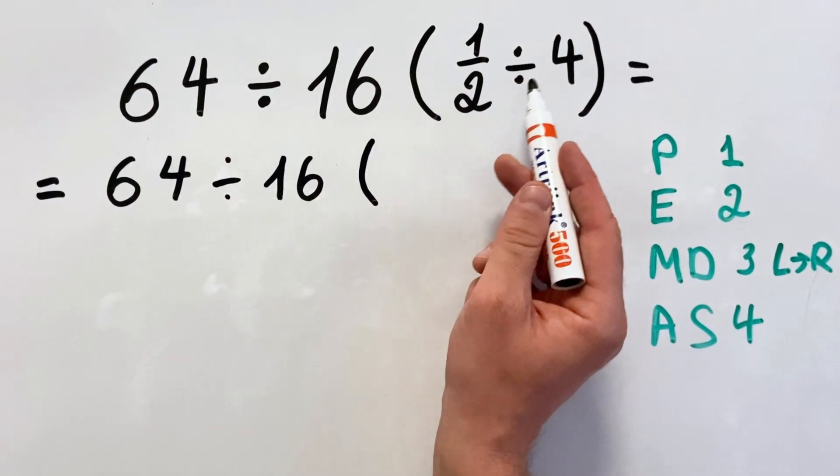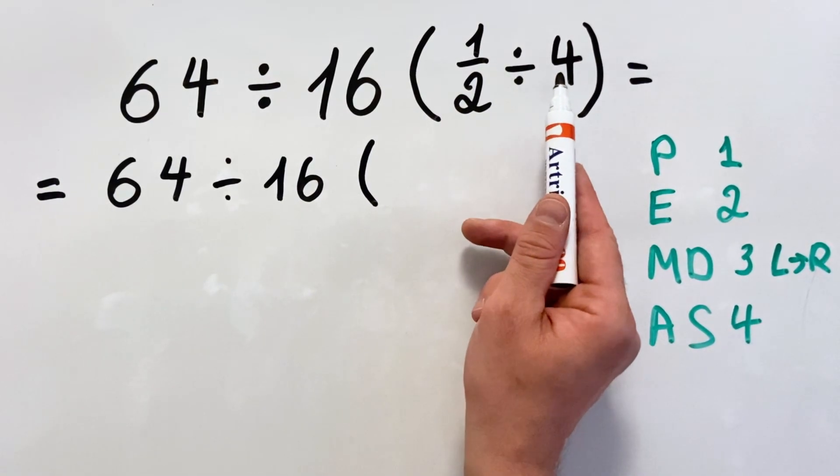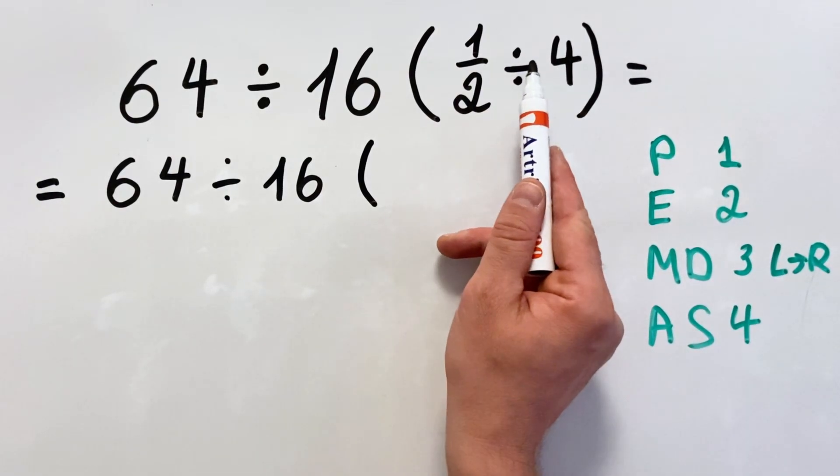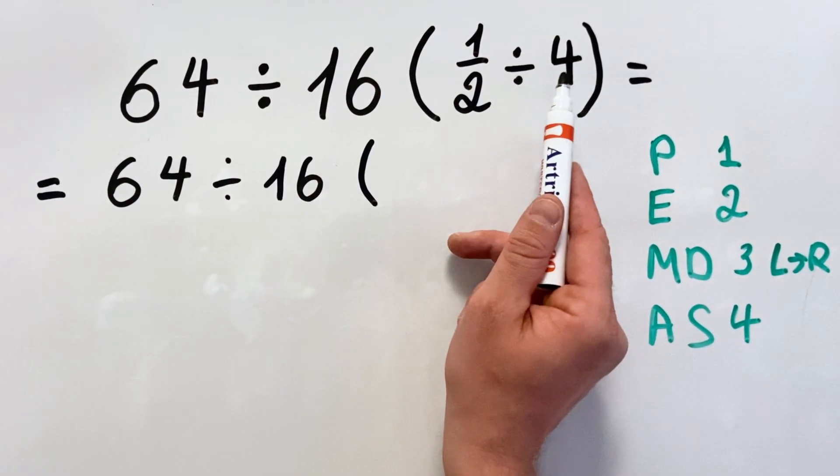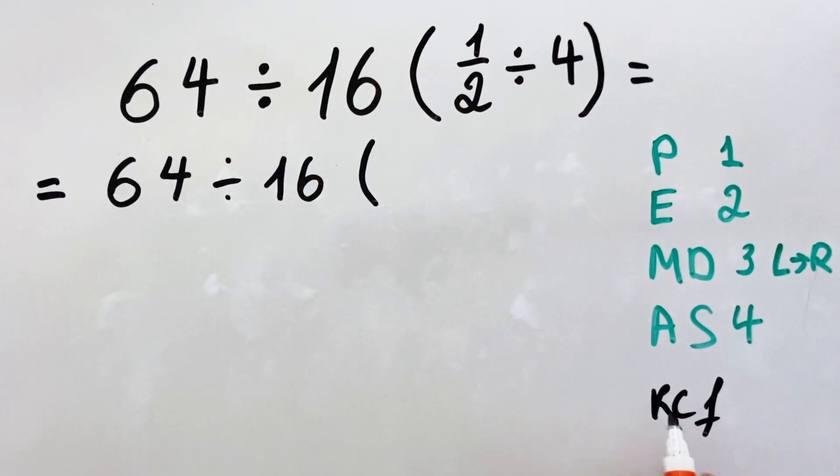Here we have 1 over 2 divided by 4. So you know when you have a fraction divided by a number, you multiply by its reciprocal to make it easier, or KCF rule which stands for keep the first, change the sign, and flip the second.